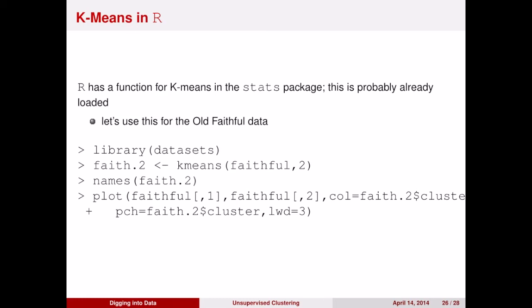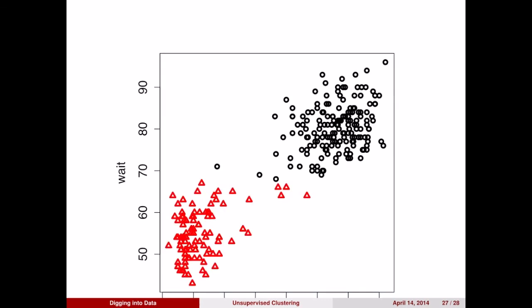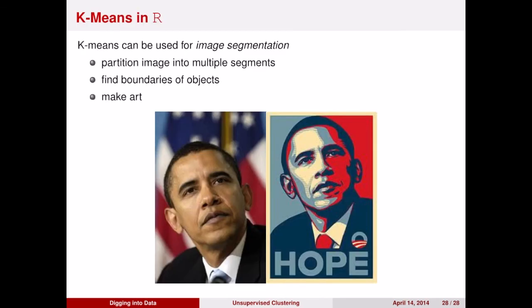For example, if we apply k-means to the faithful data set and plot those clusters based on the eruption time and the waiting time, you get clusterings that clearly divide the short eruptions and short waiting time from the long waiting time and the long eruptions. K-means can also be used to make art — for example, you can take images, take each pixel in the image, represent it as a three-dimensional vector that includes all of the color information, do a k-means clustering of that, and then recolor those clusters in an artistic way.